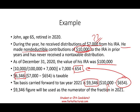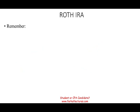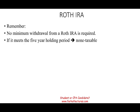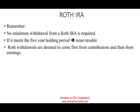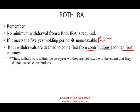This is how it works for a traditional IRA. For a Roth IRA, it's simpler. There's no minimum withdrawal requirement from a Roth IRA. If you meet the five-year holding period, it's even easier — you don't have to worry about anything. Remember, Roth IRA is financed with already-taxed money. When you take withdrawals from a Roth, you assume it's coming from contributions first — that's return of capital. Then it comes from earnings. Withdrawing any money within the five-year window is not taxable to the extent that it does not exceed the contributions.